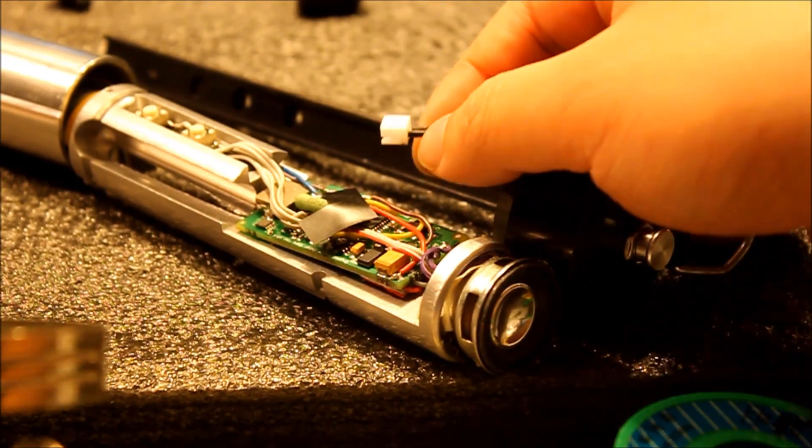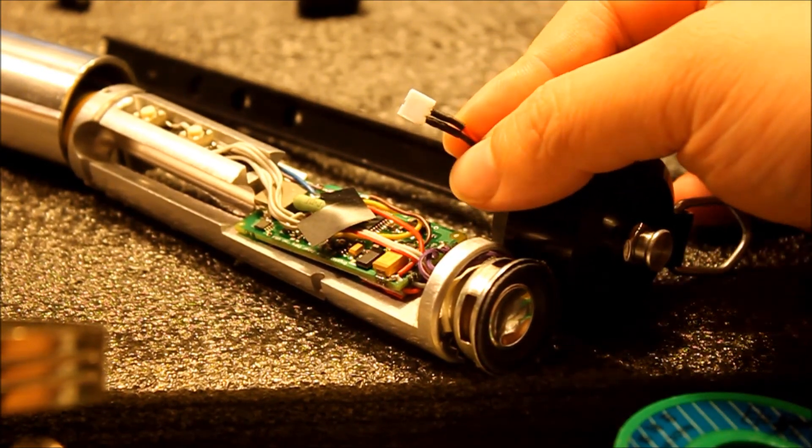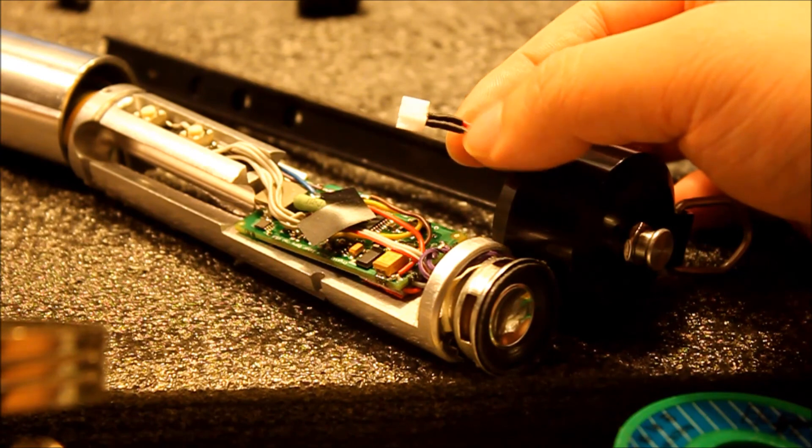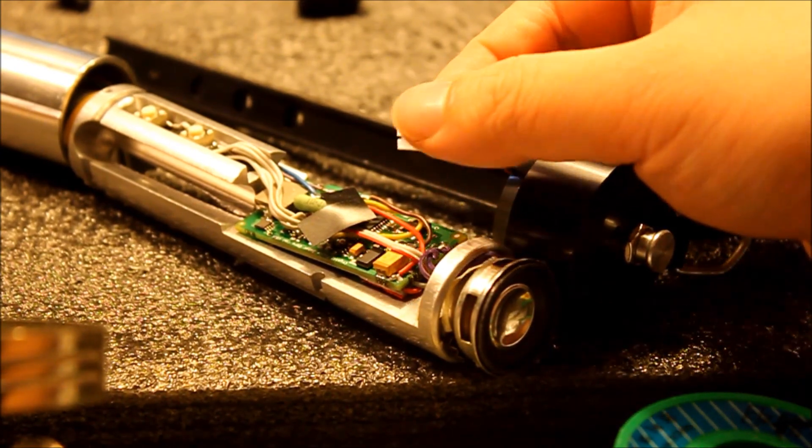Which you'll be seeing later on. So this is the result. Positive ground. Two heat shrinks. Very tight.